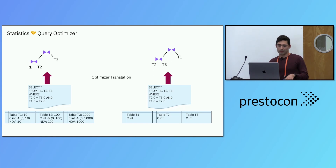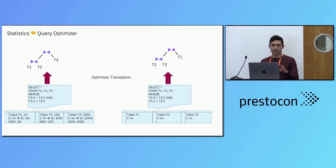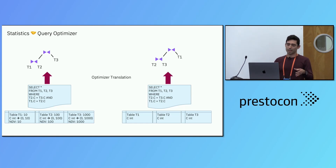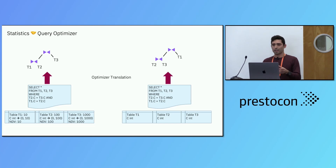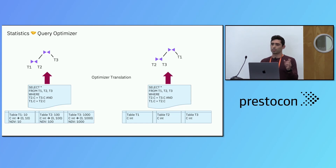I have a big diagram on the left side, and on the right side we have the same query being run. The only difference is that the query on the left side has statistics and the query on the right side does not. In Presto — or in any database system — the optimizer's goal is to take the query plan generated by the SQL and come up with the most efficient query plan possible.